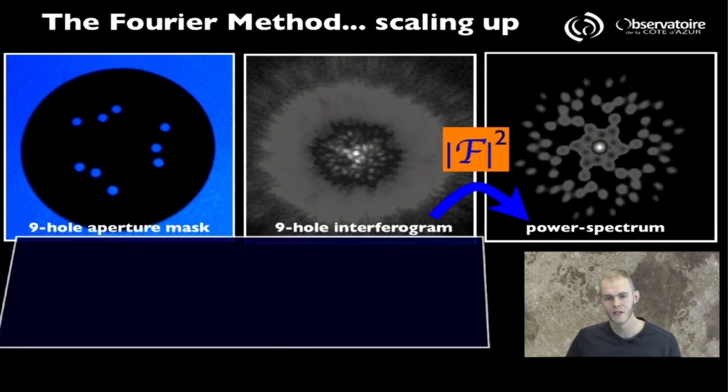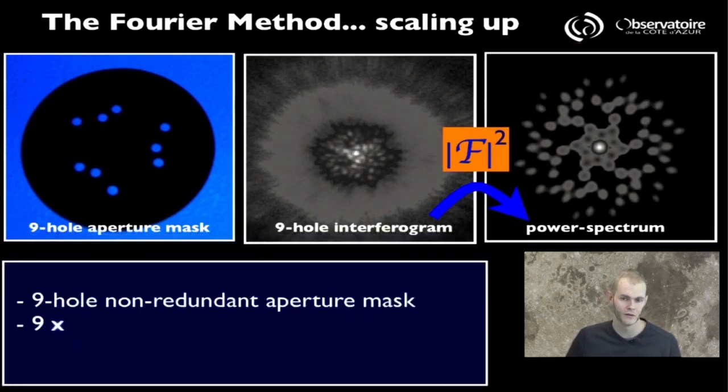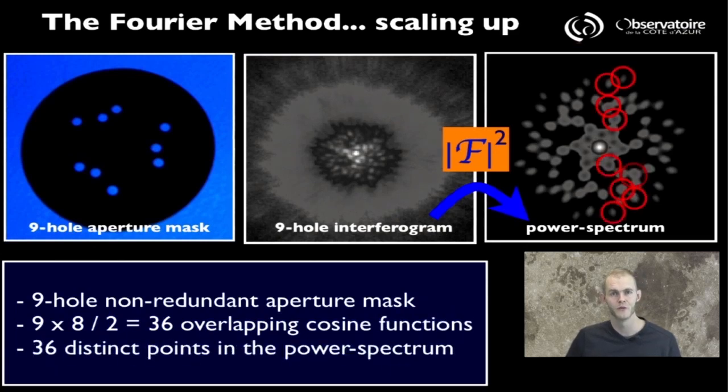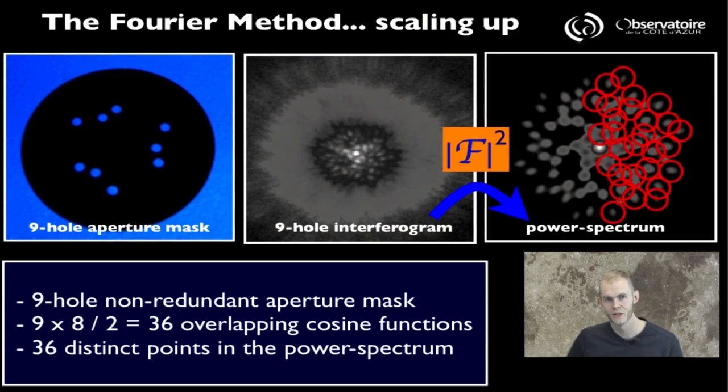In this case you see that with 9 holes you actually produce 9 times 8 divided by 2, that is 36 overlapping sets of cosinusoidal functions, which becomes a much more involving computing problem to work with.